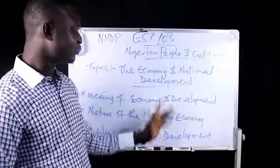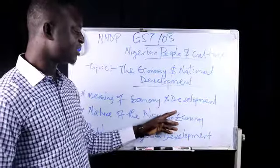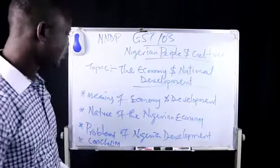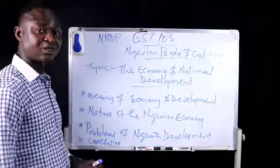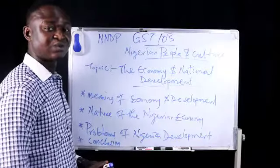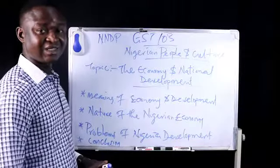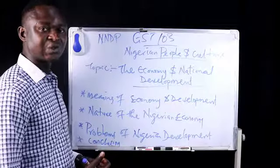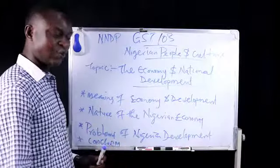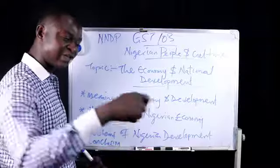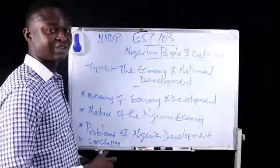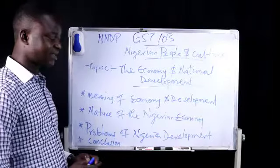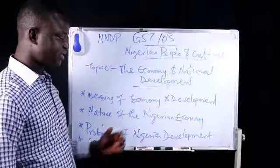Cotton played a prominent role in the economy of northern Nigeria — cotton and groundnuts. You've heard of the popular groundnut pyramid. It was not an imagination. It was so real that the colonial masters had to buy into it and exploit it to the fullest while they were in the northern region.